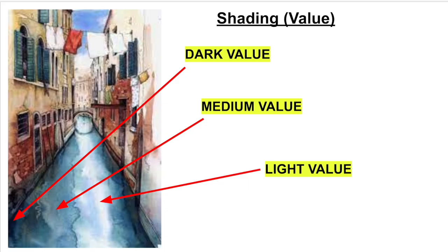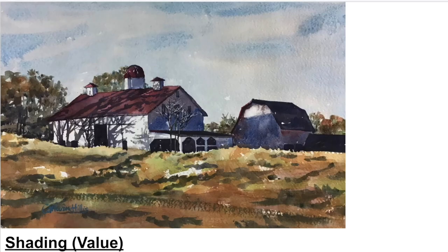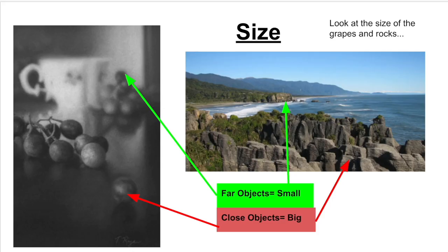We have shading or value. There could be dark, medium, and light. This helps create the illusion of space through shadows and the use of a light source.